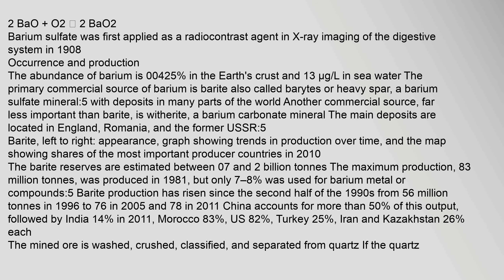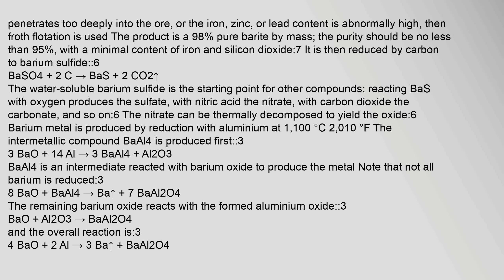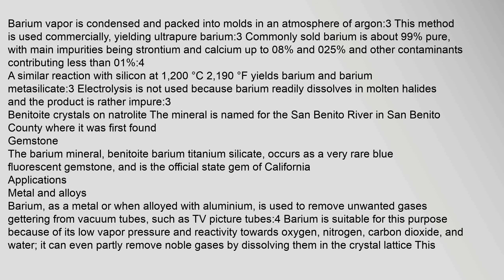In the Brin process, barium oxide reacts at 500–600°C: 2BaO + O₂ → 2BaO₂. Barium sulfate was first applied as a radiocontrast agent in X-ray imaging of the digestive system in 1908. The abundance of barium is 0.0425 percent in the earth's crust. Barite is reduced by carbon to barium sulfide: BaSO₄ + 2C → BaS + 2CO₂. The water-soluble barium sulfide is the starting point for other compounds. Barium metal is produced by reduction with aluminium at 1100°C; barium vapor is condensed and packed into molds in an argon atmosphere.